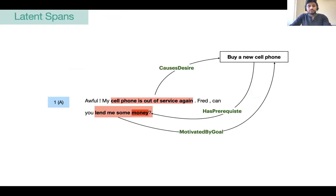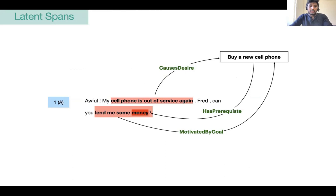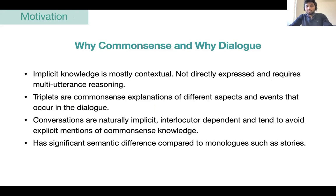Annotating implicit triplets often requires multi-step reasoning. In such cases, one or more intermediate spans, which might not be present in the dialogue, could be required to explain the relation between the constituent spans. For instance, connecting the spans 'cell phone is out of service again' and 'lend me some money' requires going through a latent span with different intermediate relations. To summarize our motivation: implicit knowledge is mostly contextual and requires multi-utterance reasoning. These implicit knowledge can be expressed as triplets, which are common sense explanations of different aspects of the dialogue. Compared to monologues, dialogues are a much richer source of implicit knowledge as they are interlocutor-dependent and involve subtle kinds of background knowledge.